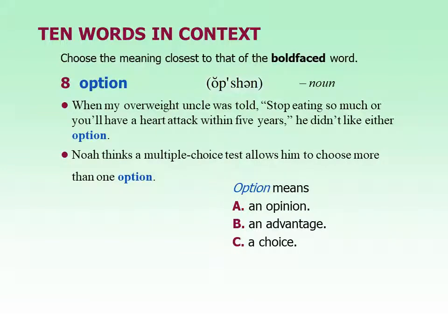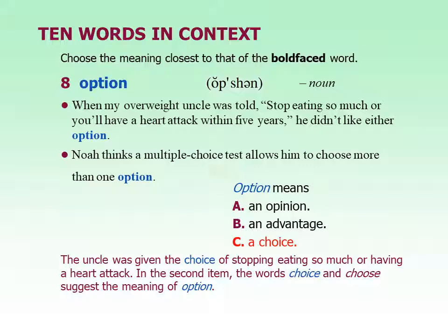The next word is option. It's a noun. When my overweight uncle was told 'stop eating so much or you'll have a heart attack within five years,' he didn't like either option. Noah thinks a multiple choice test allows him to choose more than one option. The word means a choice. We had the word 'alternative' several chapters ago — it's the same thing, but we use 'option' a lot more often. My options after graduating high school are to go to college, get a job, or maybe travel. We use this word all the time.